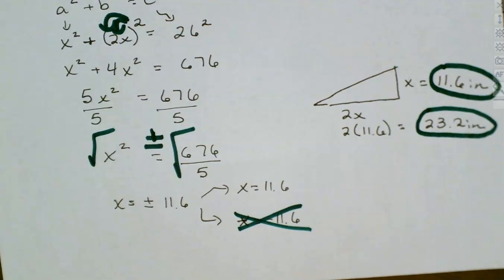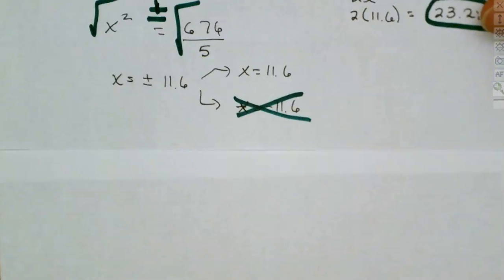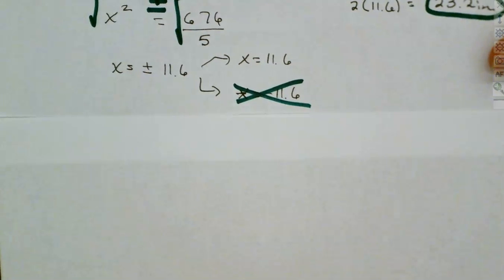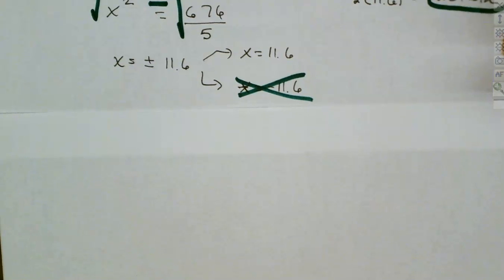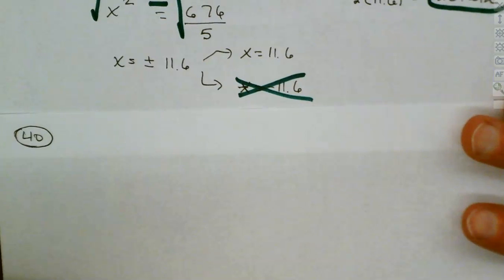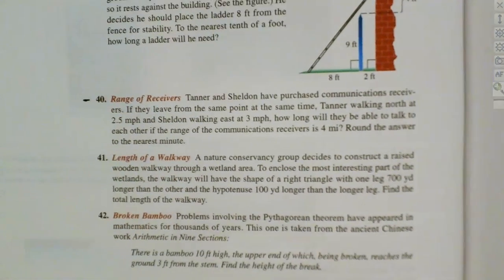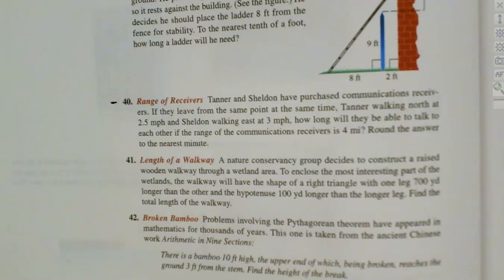The next one is a little more difficult: question 40. This one works with distance and we're going to use the Pythagorean theorem to solve it. We have to come up with the right triangle. We've got two people walking, and we want to find how far apart they are.